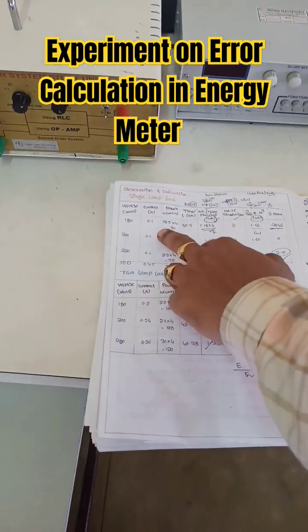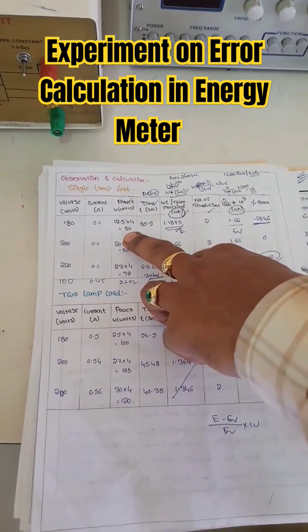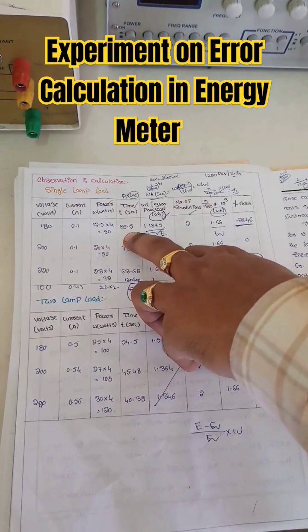Initially, you have to write down the voltage and current drawn by the equipment, and power drawn is approximately 12 watts times 4. The time taken by the disc to rotate is approximately 85 seconds.